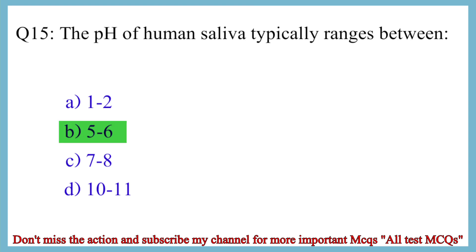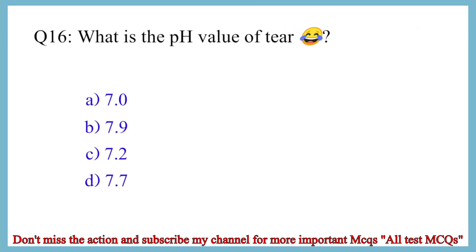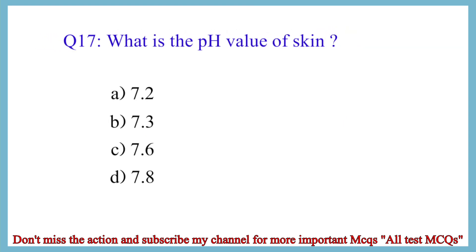Question No. 15. The pH of human saliva typically ranges between? The correct answer is option B: 5 to 6. Question No. 16. What is the pH value of tears? The correct answer is option C: 7.2.